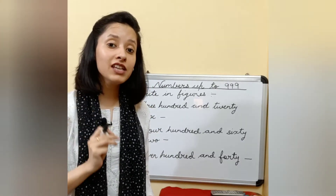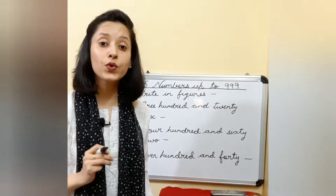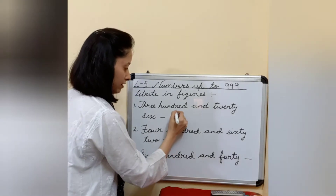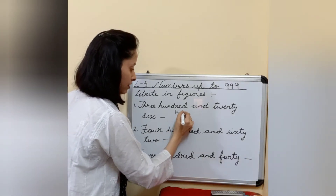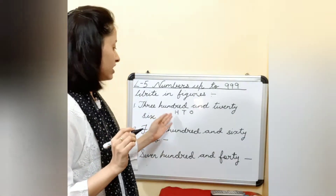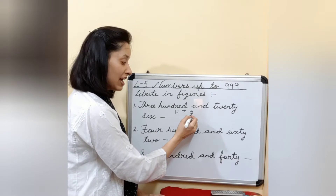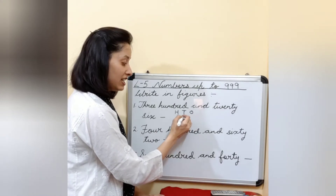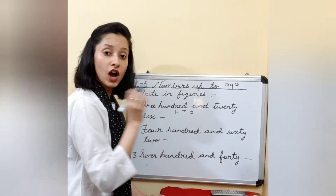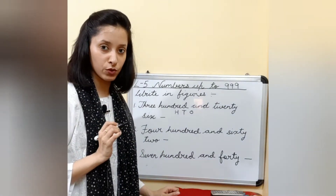So the first thing that you have to do is write H-T-O. You have written H-T-O. Now, O stands for ones place, T stands for tens place, and H stands for hundreds place. You know this — I have told you before also.